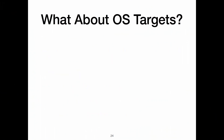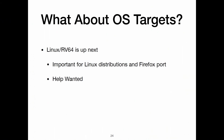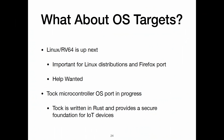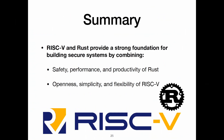What about OS targets — what if you actually want to run an operating system? Linux RV64 support is up next; it's sort of in progress. This is important for Linux distributions and for the Firefox ports, since Firefox uses Rust now. I'm hoping we can gather people from the community to work on this. There's a software meeting tomorrow during the Foundation Day where I hope we can talk about Rust and coordinating on bringing up Linux, stable distributions, LLVM, and all that stuff. There's also a Tock microcontroller OS port in progress — Tock is an OS kernel written in Rust that provides a secure foundation for IoT devices.